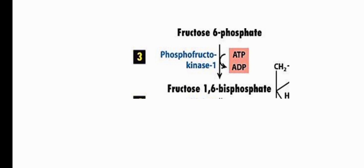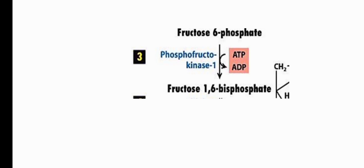Step 3: Fructose-6-phosphate is converted into fructose-1,6-bisphosphate by the enzyme phosphofructokinase-1 (PFK-1). A phosphate group from ATP is added to the first carbon position of fructose, converting ATP to ADP. This wastes another ATP — so two ATPs are consumed by steps 1 and 3.